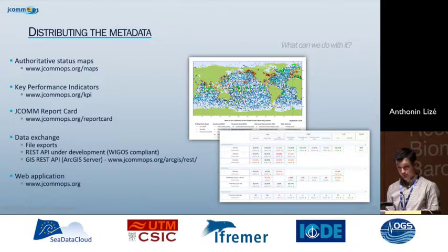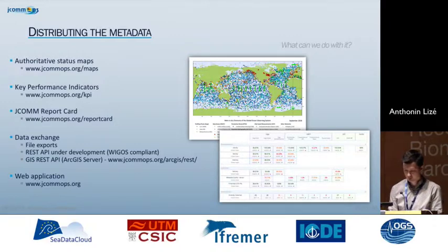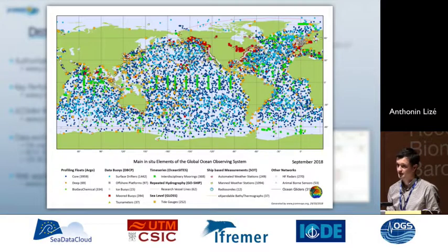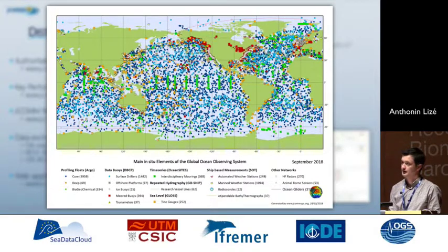Once we have done all of that, we can produce some products. Our first and main product is authoritative maps. Each month we produce maps — both integrated ones covering all networks and network-specific ones.